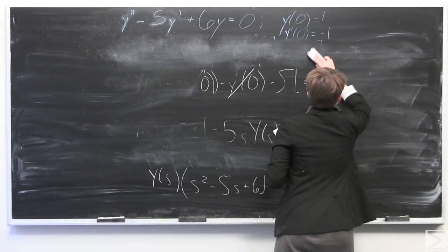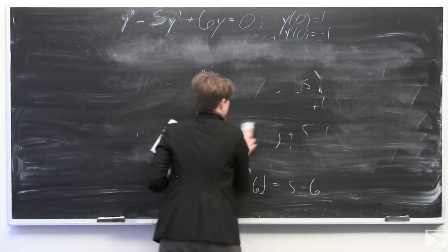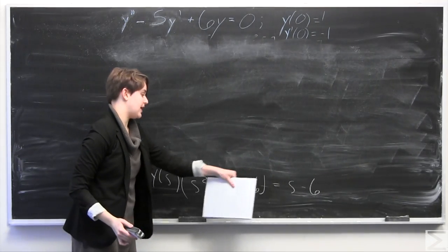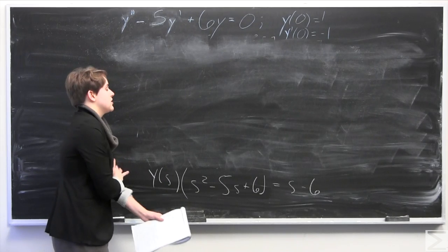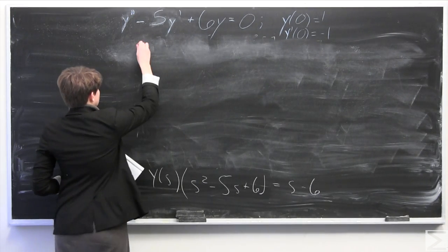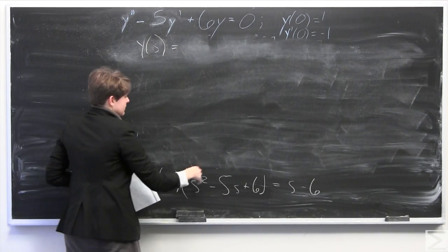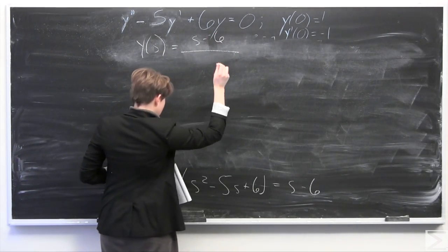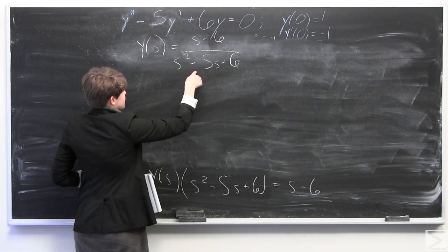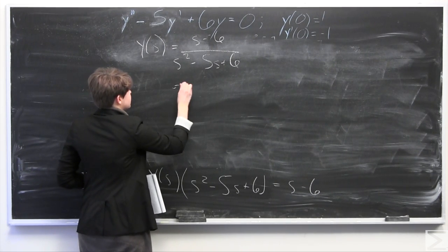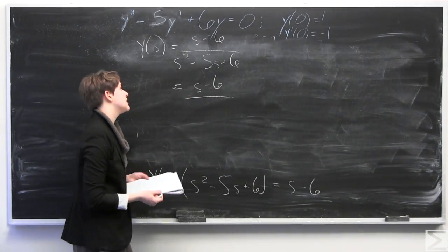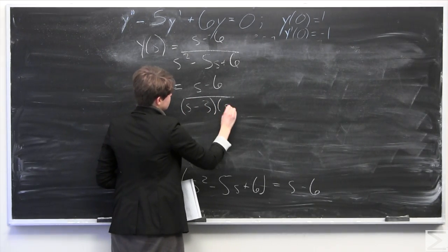Now you have two options — you can either factor the denominator first and then divide, or divide and then factor. I'm going to divide first and then factor. So Y(s) equals s minus 6 in the numerator, over s squared minus 5s plus 6 in the denominator. Factoring the denominator gives us s minus 6 over the quantity s minus 3 times s minus 2.